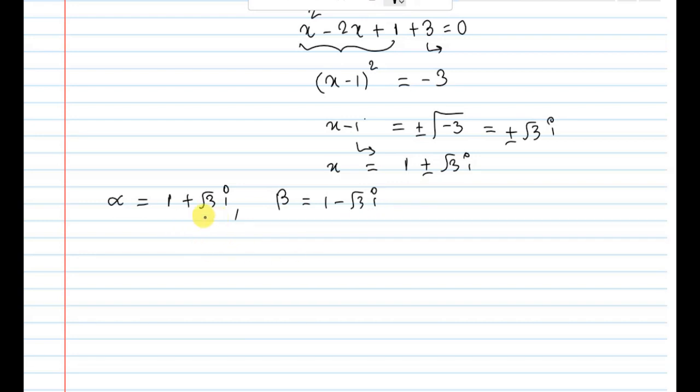Then r cis theta. Let's write: let 1 plus root 3i equal to r cis theta, where r equal to, what is the formula for r? Root of a squared plus b squared. a is 1, b is root 3. From the complex number a plus ib format.